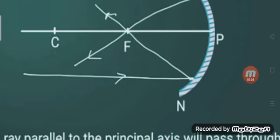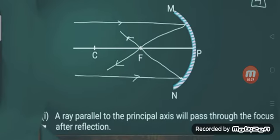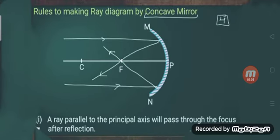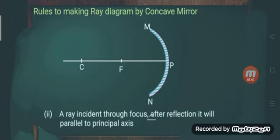This is our first rule, which is very easy. After that, the second rule for making a ray diagram by concave mirror: a ray incident through the focus, after reflection, will go parallel to the principal axis.